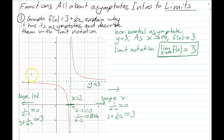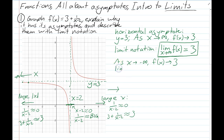We can also talk about what happens as x approaches negative infinity — that's the further you go out to the left. As x approaches negative infinity, f(x) approaches 3 as well. So we write that with limit notation: the limit as x approaches negative infinity of f(x) is equal to 3. That's the horizontal asymptote described with limits.